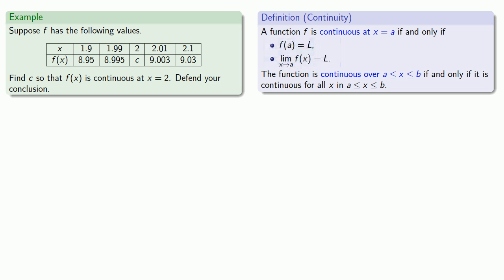So, the first question we want to ask ourselves is, what's the limit as x approaches 2 of f(x)? And the table suggests that the limit as x approaches 2 of f(x) is equal to 9.